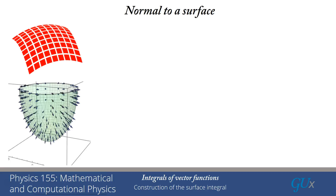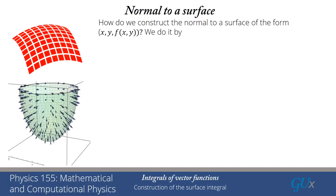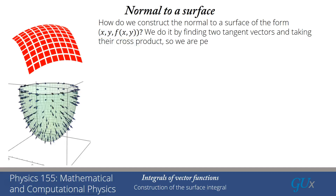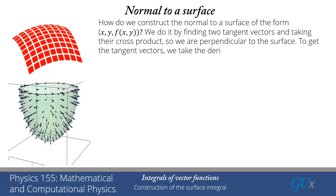We have to construct the normal to the surface. The book goes through the derivation, but I want to go through it again. The first question is: how do I construct the normal to a surface? Let's assume our surface is described by a function so that our 3D object is (x, y, f(x,y)). The way we find the normal to the surface at any given point is we find two tangent vectors to the surface.